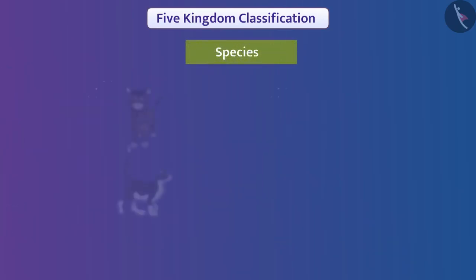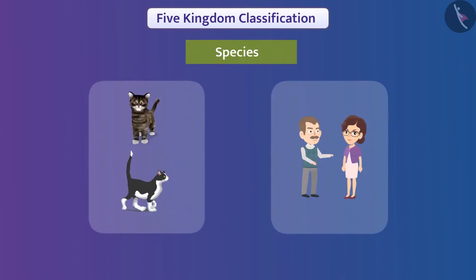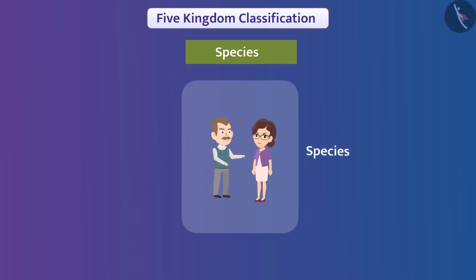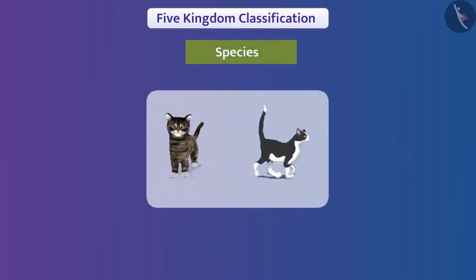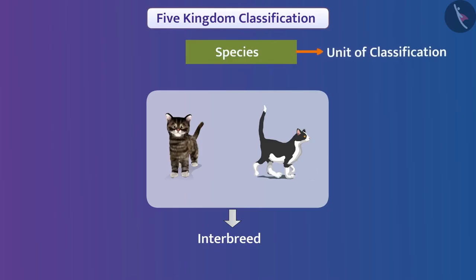Species are the group of organisms that have considerable similarities in terms of body organization and can reproduce with each other. For example, all humans come under the same species, which are called sapiens. This species belongs to kingdom Animalia. Since species contain organisms that are very similar and can interbreed, the species cannot be divided further. Hence species is called a unit of classification.